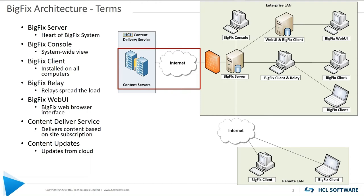Content delivery service: every hour on the hour, your BigFix server talks to the HCL content delivery servers in the cloud and asks whether there is new BigFix content — for example, new patches released for Patch Tuesday, or a new version of a CIS check. When HCL publishes that to the content servers, your BigFix server is able to see the new content, grabs it, and makes it available for endpoints and relays to evaluate.